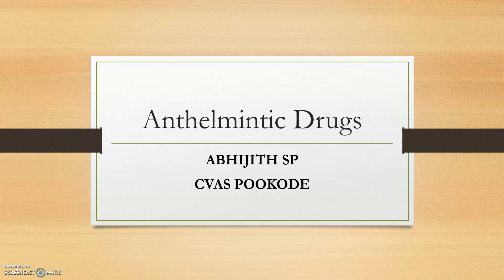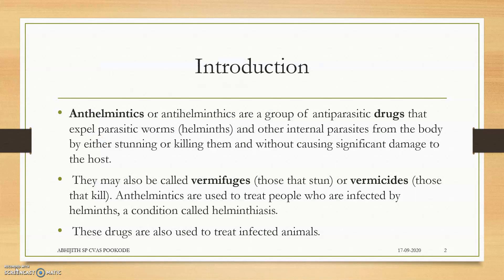Introduction: what are anthelmintics? Anthelmintics, or antihelminthics, are a group of antiparasitic drugs used to expel parasite worms and other internal parasites from the body, either by stunning or killing or inactivating them, or causing the death of the parasite. They may also be called vermifuges — those that stun worms — and vermicides — those that kill.